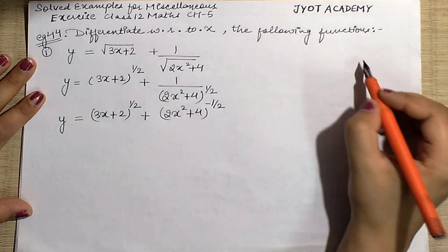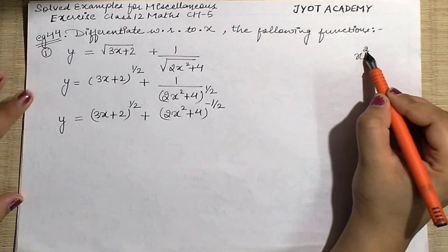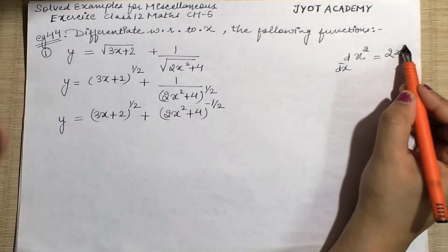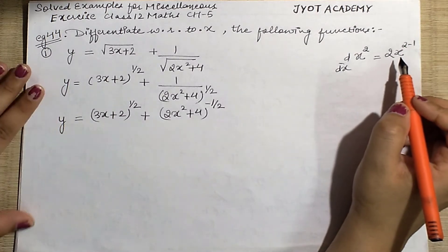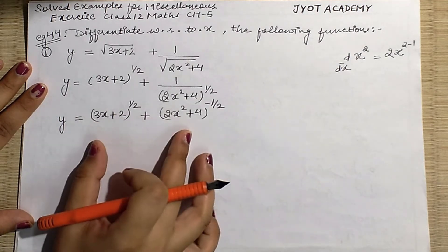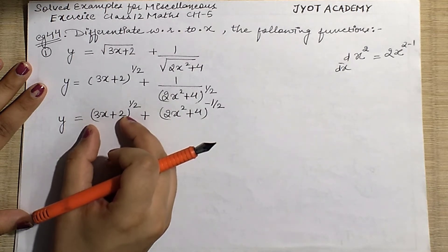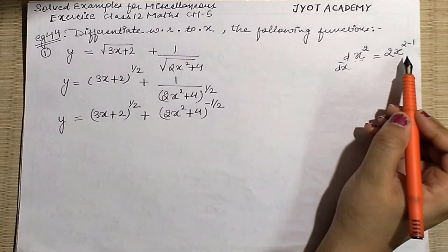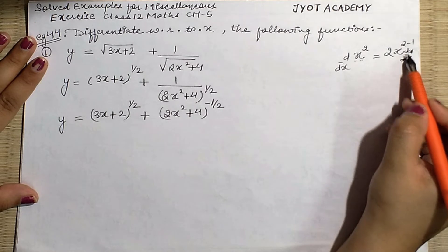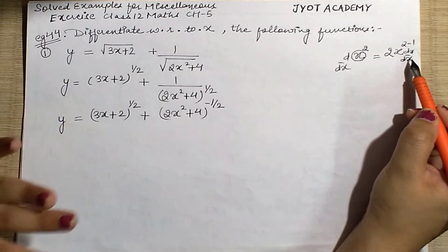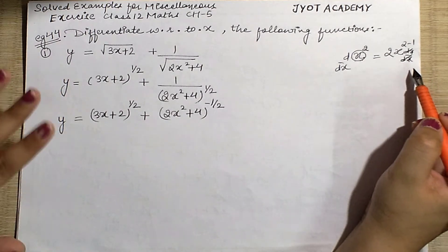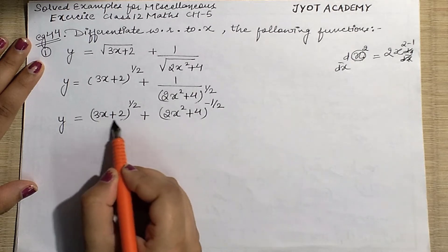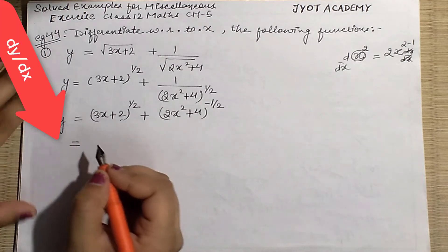Now, how do we treat and differentiate this? Suppose you have x raised to some numeric power — you simply bring the power to the front and reduce the power by one. That is simple differentiation. But here instead of x, the value is (3x+2), so when you differentiate this you will apply the chain rule — the inner value which is in place of x also needs to be differentiated.